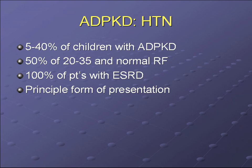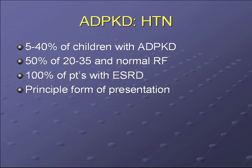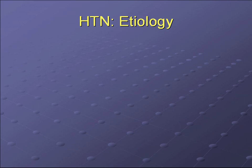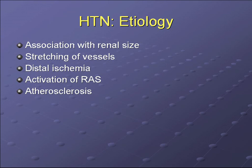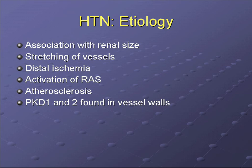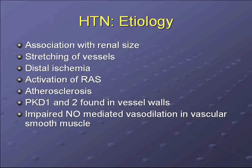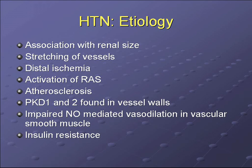Hypertension is present in 5 to 40% of children, 50% of patients aged 20 to 35 with normal renal function, and essentially 100% of patients with end-stage renal disease. It is now the most common form of presentation, which used to be hematuria. The etiology is not fully understood, but it's associated with increasing renal size — perhaps stretching of renal vessels by enlarging cysts creates distal ischemia and activation of the renin-angiotensin system. PKD1 and PKD2 proteins have been found in vessel walls, and there may be impairment of nitric oxide-mediated vasodilation. It's also associated with insulin resistance.